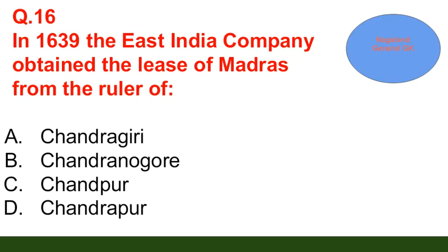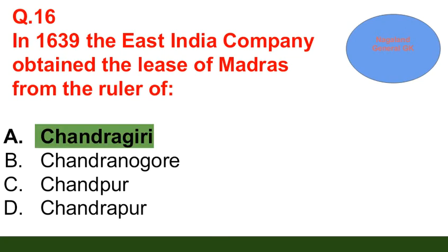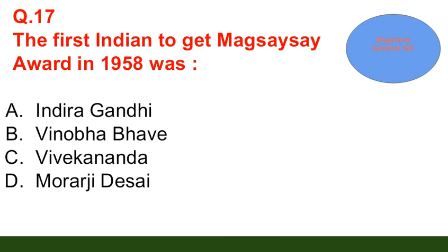Question number 16: In 1639, the East India Company obtained the lease of Madras from the ruler of — option A: Chandragiri; option B: Chandernagore; option C: Chandrapur; option D: Chandragipur. The correct answer is option A — Chandragiri.